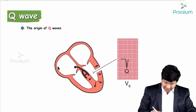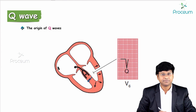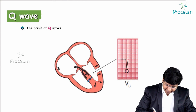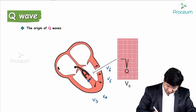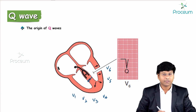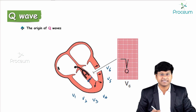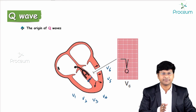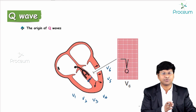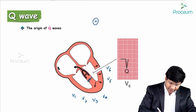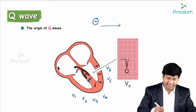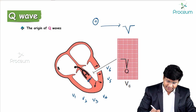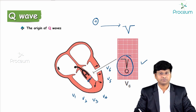The direction of septal depolarization is from left to right. So if you have placed lead V6, then V5, V3, V4, V1, and V2 — the depolarization of the septum moves away from the electrode. When the wave of depolarization moves away from the electrode, you will have a negative wave, which is the negative Q wave.